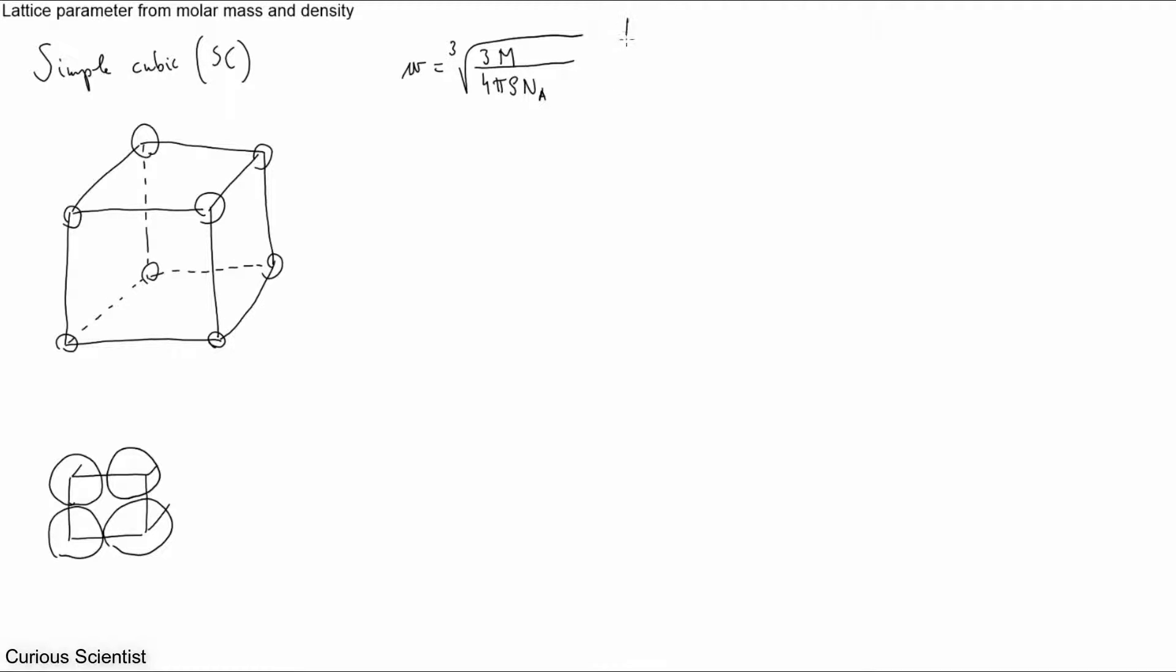And NA is still the Avogadro's number which is 6.022 times 10 to the 23rd power mol to the minus 1. So what is Wigner-Seitz radius?